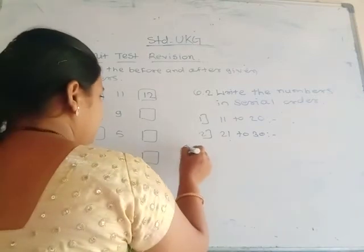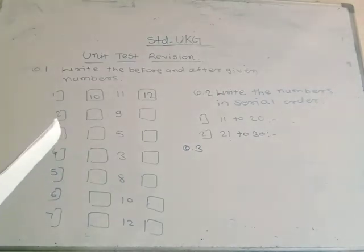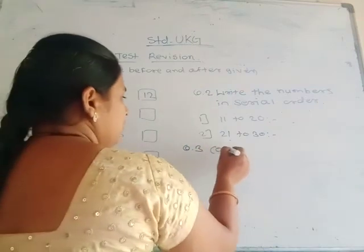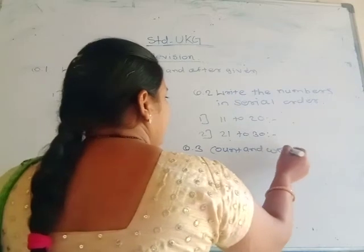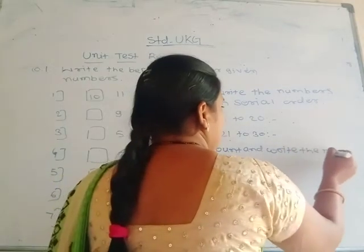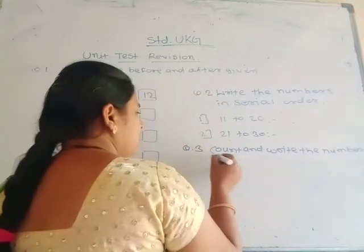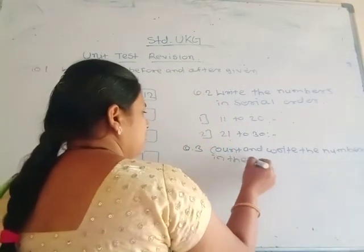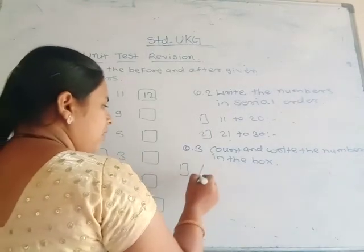Then question 3. Count and write the numbers in the box. Here are some figures given; you count them and write the correct number in the box.